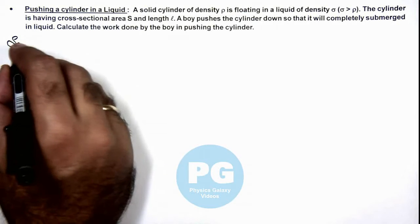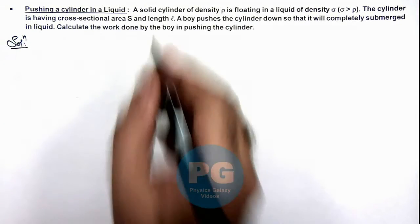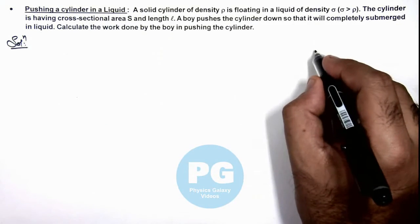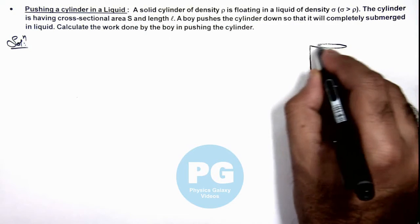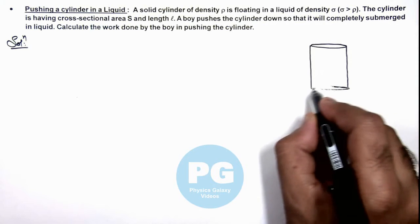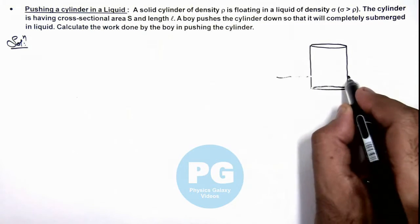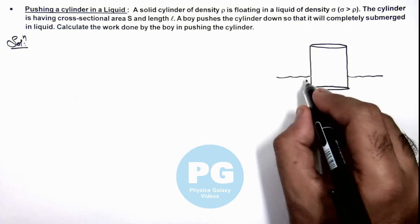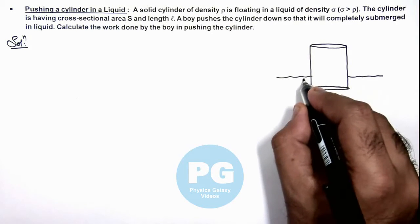In the initial situation when the cylinder would be floating in the liquid, we can draw the situation. In the floating state, say the cylinder is submerged to a depth h in the liquid.